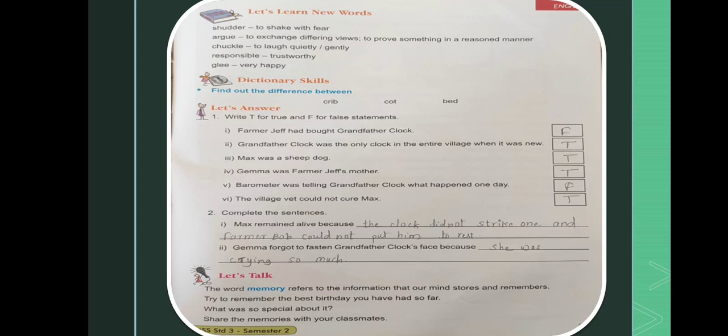Max remained alive because the clock did not strike one and Farmer Bob could not put him to rest. The second one: Jemma forgot to fuss on grandfather clock's face because she was crying so much. Next.